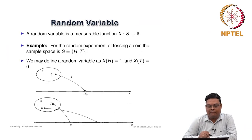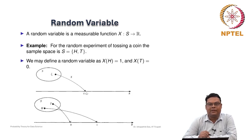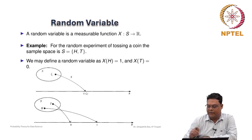We will learn about random variables. A random variable is a measurable function from sample space S to the real numbers R. To understand what a measurable function is, we need to know about the sigma field. So let us recall the sigma field.